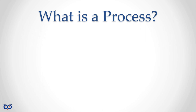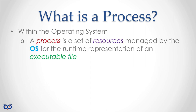So what is a process? A process is something the operating system manages. Within your operating system, a process is a set of resources managed by the OS for the runtime representation of an executable file. Your operating system has a set of resources — disk, network, monitor, keyboard, RAM — and the OS is put in place to manage these resources. If you and I are both processes, we might try to use these resources in a competing way, so the operating system is like the arbitrator who says who gets to use what and when.